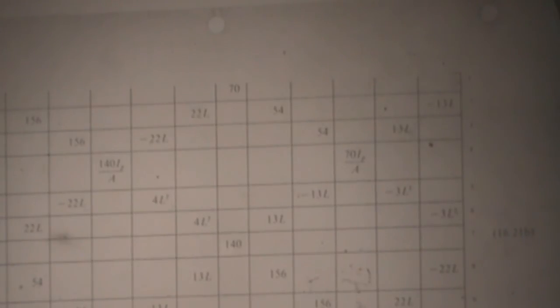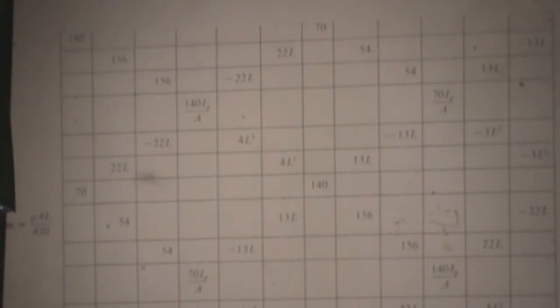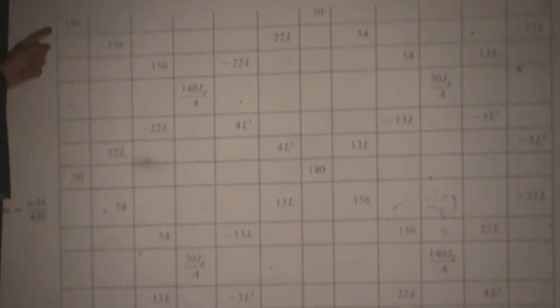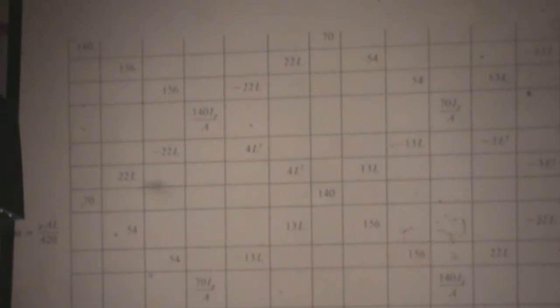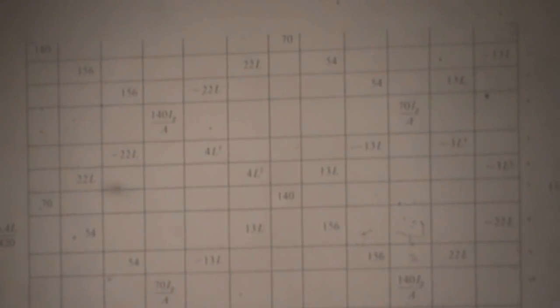There is also the mass matrix shown here. The diagonal term is about 33% — one-third of the beam mass — telling you what force you need to apply to give that end a unit acceleration.